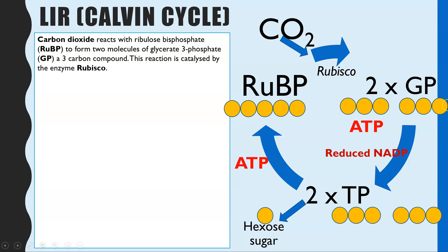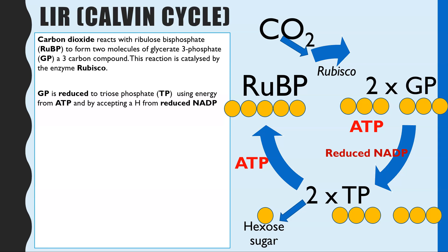For AQA you do not need to know the full name — GP is sufficient. We have two three-carbon compounds. We've gone from adding one carbon in carbon dioxide with the five carbons in RuBP to create six carbons, which is two lots of GP, each a three-carbon compound. The next step looks at how these two molecules of GP are converted into TP, or triose phosphate — again, you do not need to know that full name for AQA.